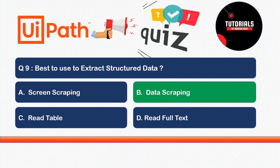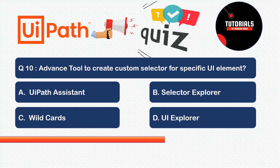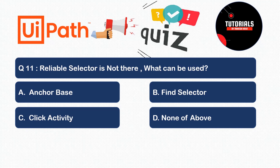Question 10: What is the advanced tool used to create a custom selector for a specific UI element? Options: A) UiPath Assistant, B) Selector Explorer, C) Wildcard, or D) UI Explorer. The correct answer is UI Explorer — an advanced tool for building custom selectors using specific properties of UI elements.